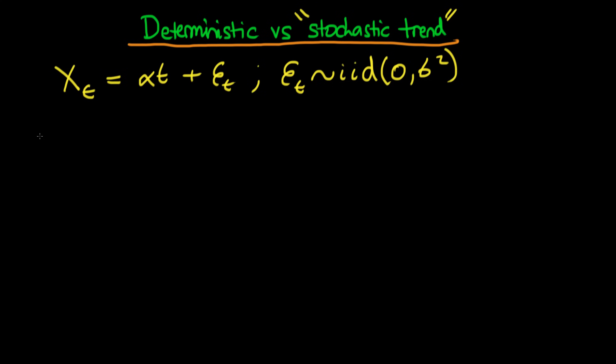So what are the properties going to be like of this particular type of process? Starting off with the mean, the expectation of Xt is just going to be equal to Alpha t from this particular first term and the second term is going to yield zero because the expectation of Et is zero. So we see straight away that this particular process is non-stationary by the definition which we first introduced for a series to be stationary.